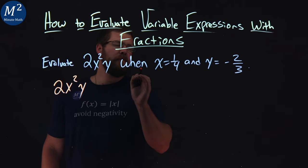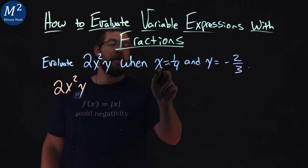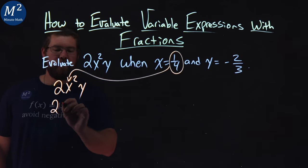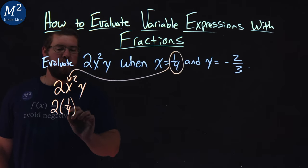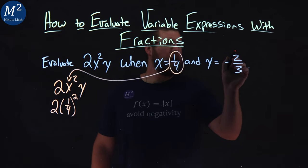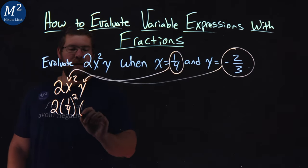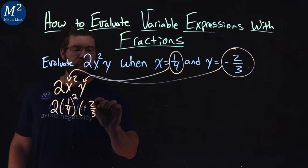Now we need to substitute 1/4 for our x value. So we have 2 times 1/4 in place of x squared, and then for y we have negative 2/3. We do the same thing, times negative 2/3.